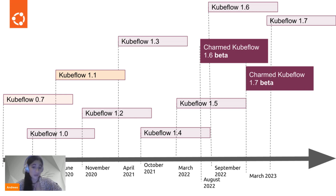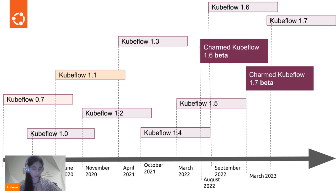It is also a nice way to get a glance of what's coming next. Additionally, Charmed Kubeflow is the foundation of Canonical's growing open source MLOps ecosystem. It is integrated with a wide range of tools such as Prometheus or Grafana as part of the Canonical Observability Stack, or MLflow.